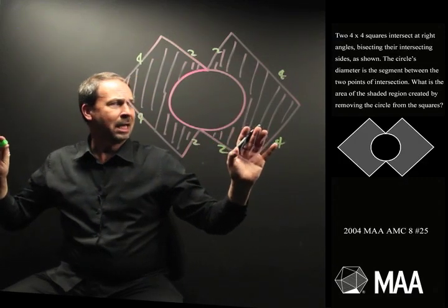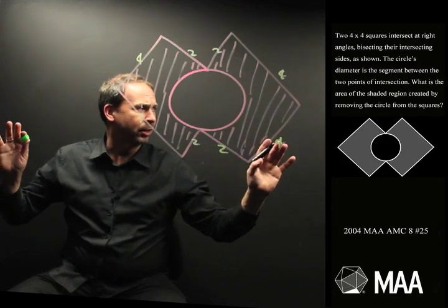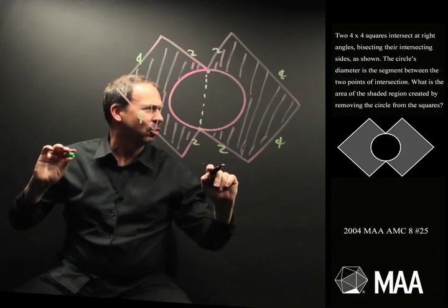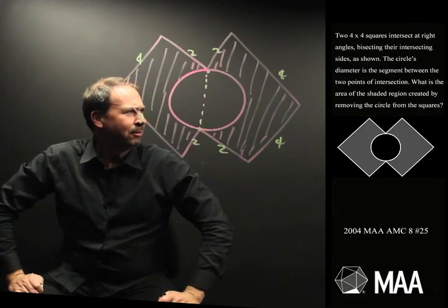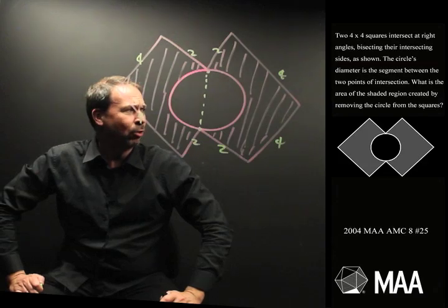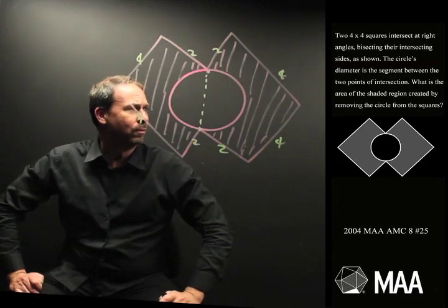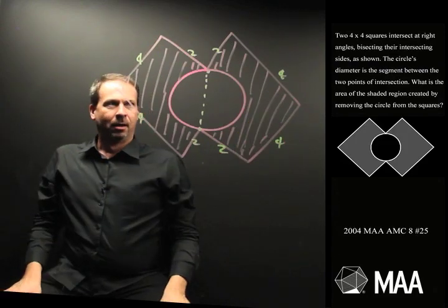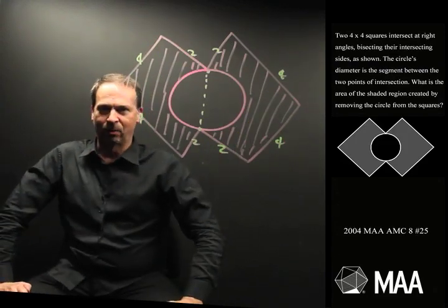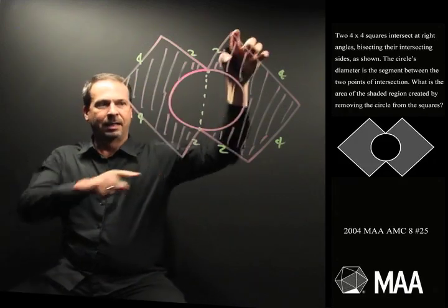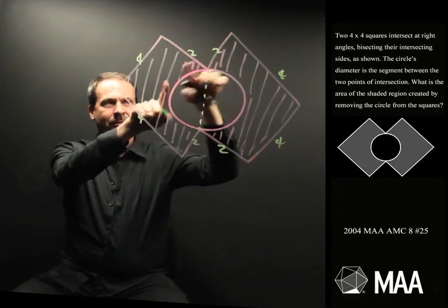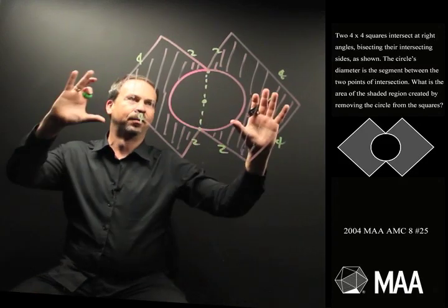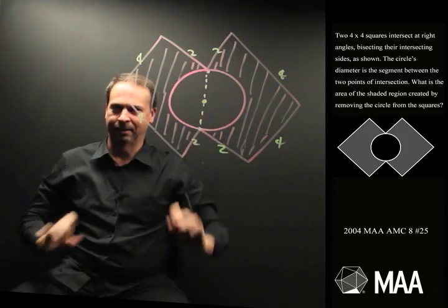The circle's diameter is the segment between the points of intersection, the two points of intersection. This is the diameter of the circle, I guess what you assume is true is going on here. Gosh, what's the question saying? What is the area of the shaded region created by removing the circle from the squares? Basically, what's the area of the shaded stuff? Okay, got the question. That took me a while to read through that one. This figure, squares intersecting as shown, 90 degrees, circle in the middle, that's the diameter, so that's the radius.